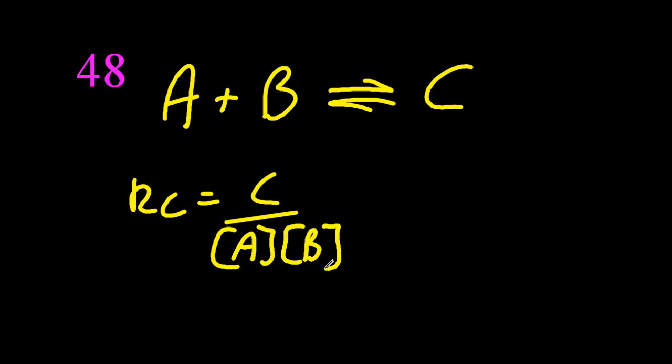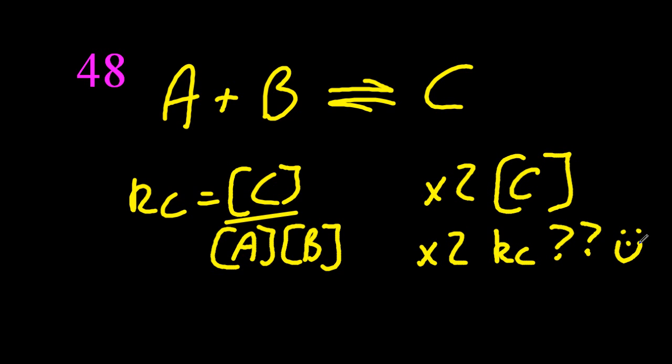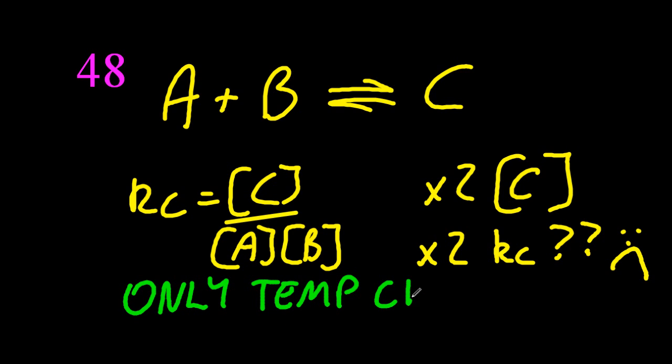Kc is C over A times B, so if I double C, I double Kc. Surely. That's right, isn't it? No, that's completely wrong. Only thing that changes Kc is temperature. Only thing that changes Kc is temperature for a reaction.